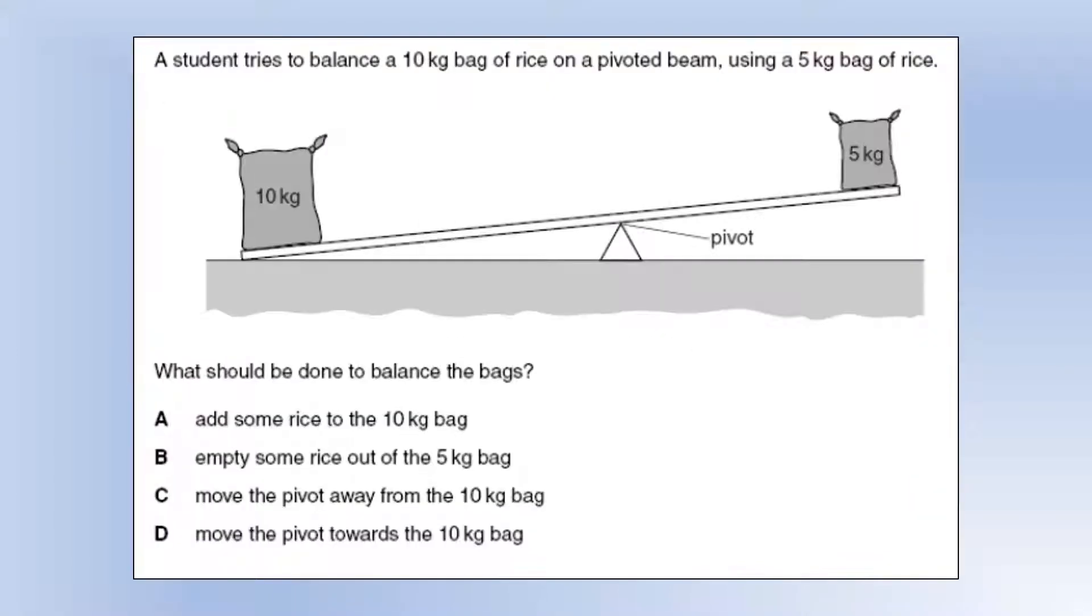A student tries to balance a 10 kilogram bag of rice on a pivoted beam using a 5 kilogram bag of rice. What should be done to balance the bags? Well, at the moment the moment of the weight force of the 10 kilogram is bigger than that of the 5 kilogram, which is why it's tipped up like this. So we either need to reduce the moment of the weight force of the 10 kilogram bag or increase the moment of the weight force of the 5 kilogram bag.